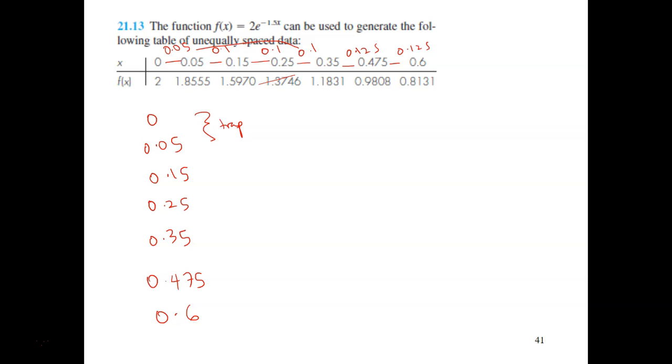Of course, from here to 0.35, from here to here, you will use 3 over 8. Because you have 1, 2, 3, 4 points and 3 segments. And the remaining,